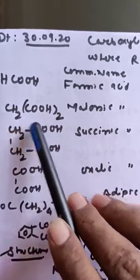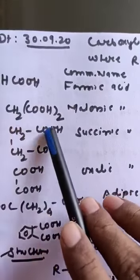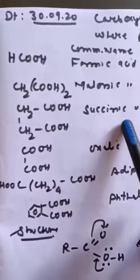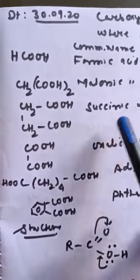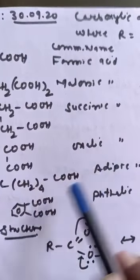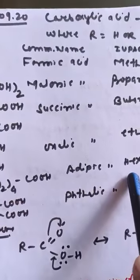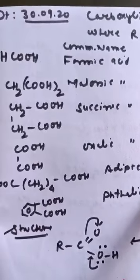Similarly, for malonic acid, CH2COOH, whole twice. This is succinic acid, very important acid. And this is oxalic acid. This is adipic acid, 6 carbon atom containing with 2 carboxylic group. And this is phthalic acid.